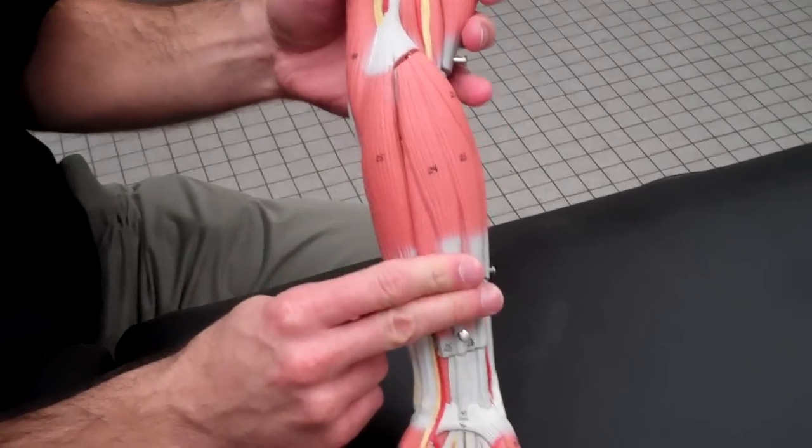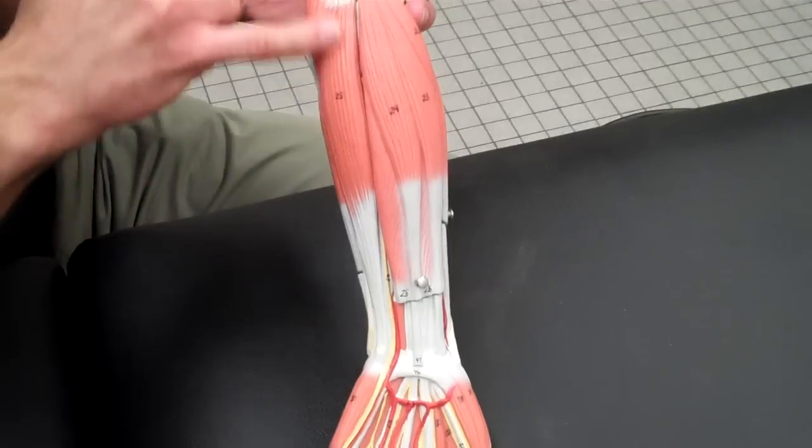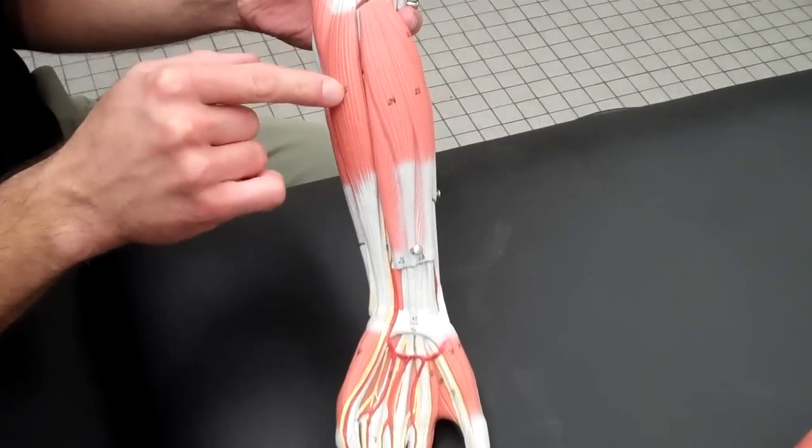Now if we flip to the palmar side, we're still on the pinky side as you work up. This muscle right here is your flexor carpi ulnaris.